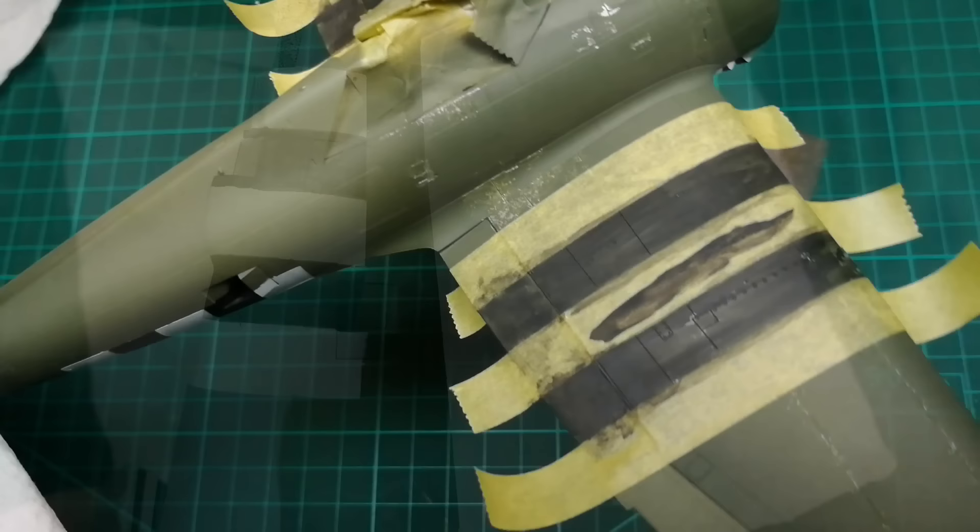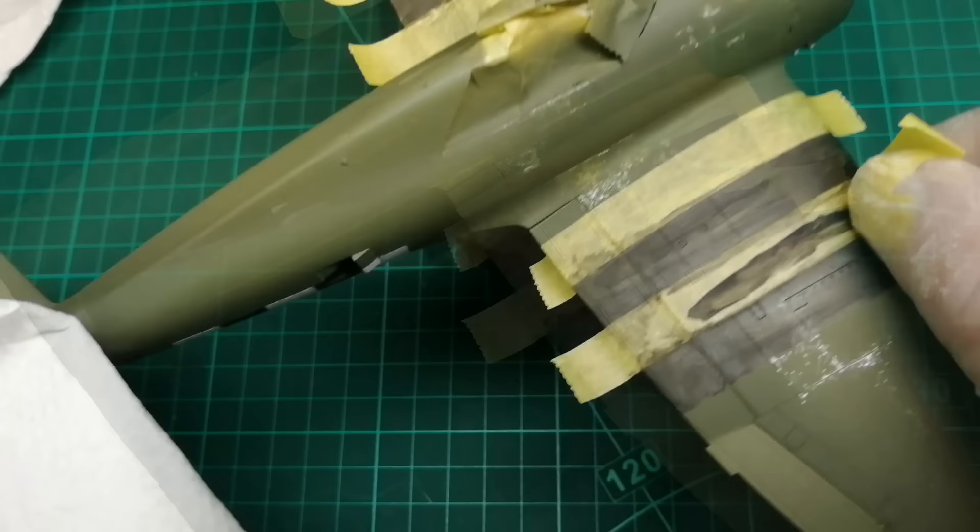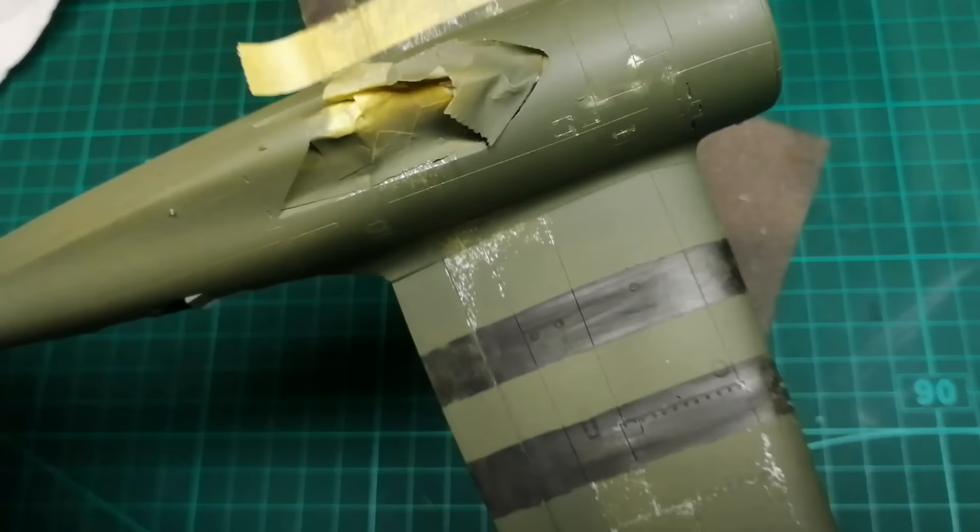While I've got the black out, I'm going to apply the invasion stripes on the top wing, but just with one very light coat. The aim here is that when I apply the darker green on top, hopefully these will show through slightly.